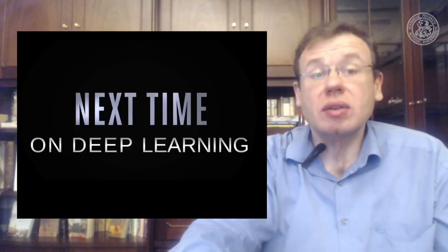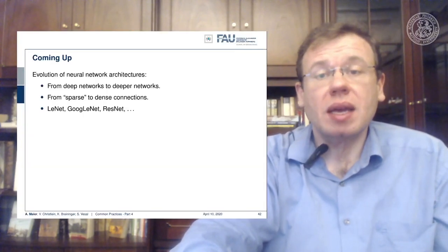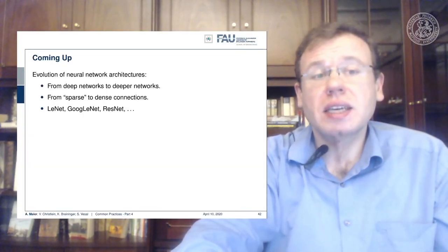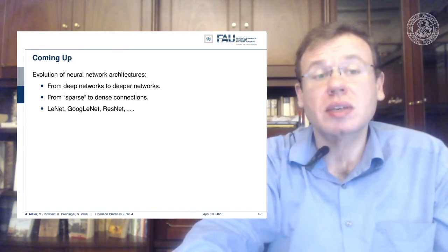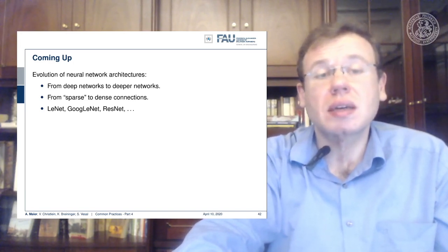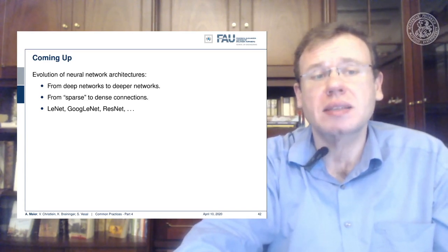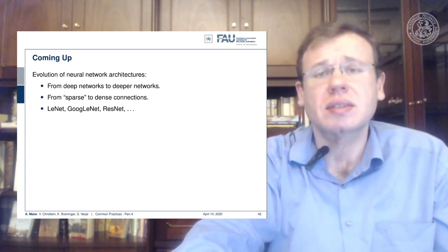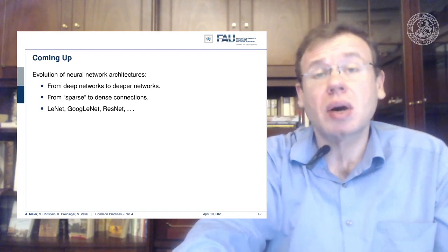Next time on deep learning we actually want to look at the evolution of neural network architectures — from deep networks to even deeper networks. We want to look at sparse-to-dense connections, and we'll introduce many common names you'll hear all over the place: LeNet, GoogLeNet, ResNet, and so on. We will learn about many interesting state-of-the-art approaches.